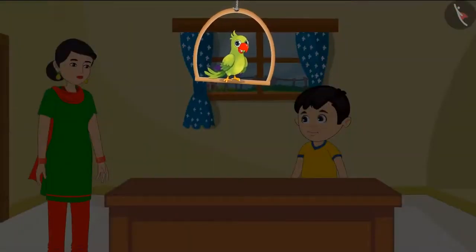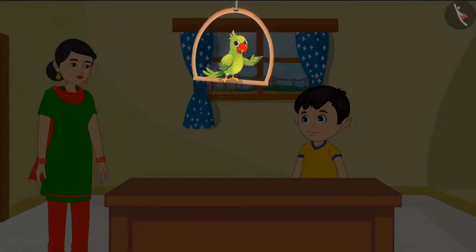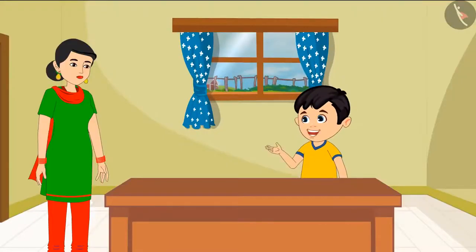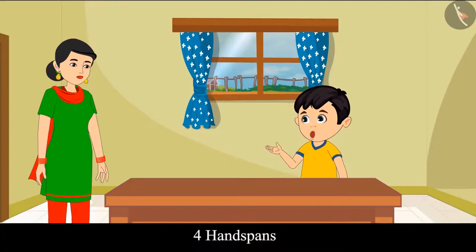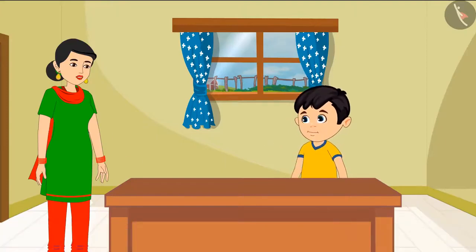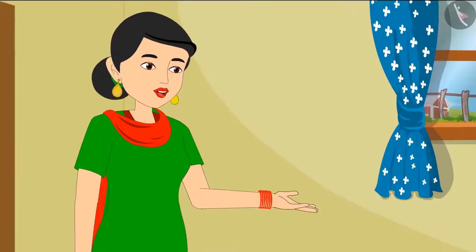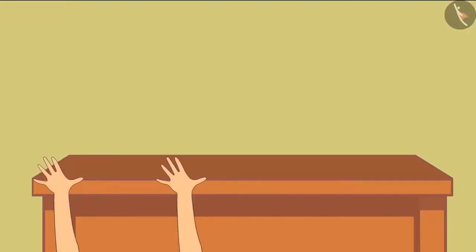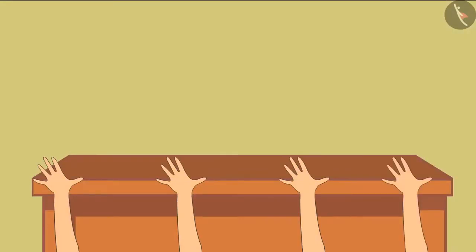Chotu is measuring the length of the table at home with his hand and gets four hand spans. Mother says the table is very long and asks him to measure again. Chotu repeats: one, two, three, four — and says it is done.